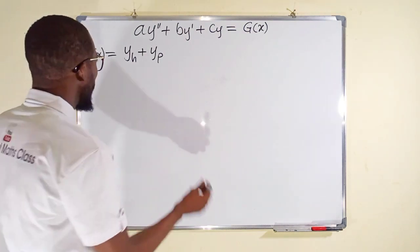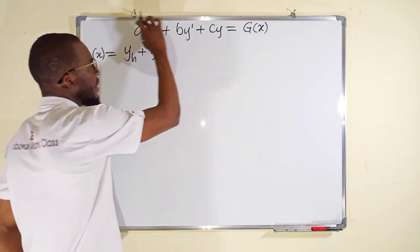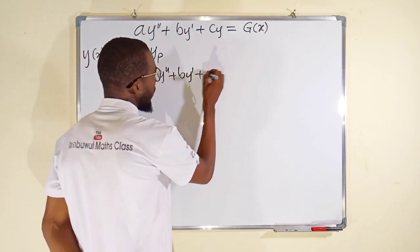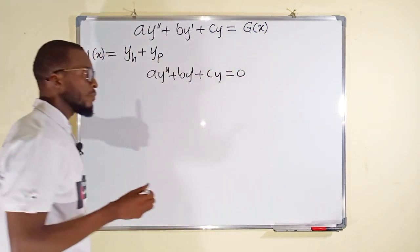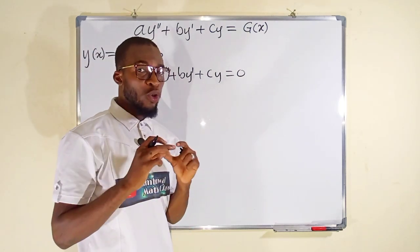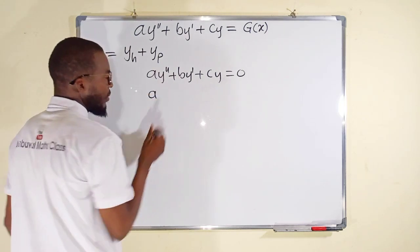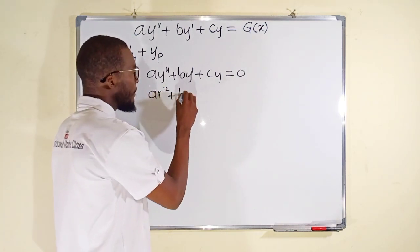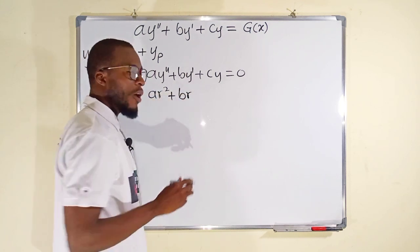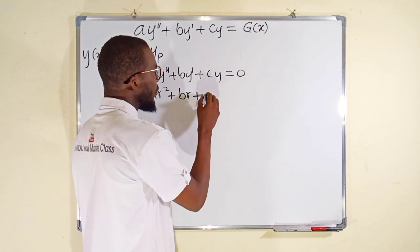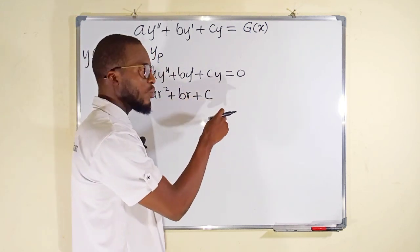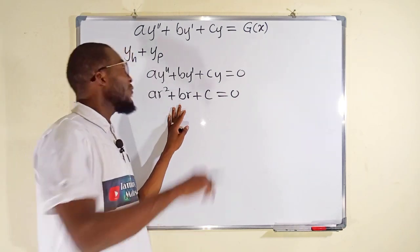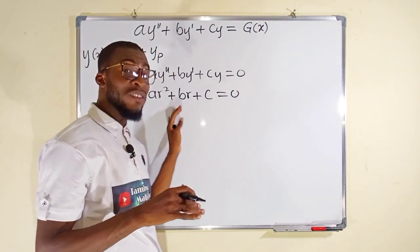To find the solution to the homogeneous type, we set the equation a y double prime plus b y prime plus cy equal to 0. Next, we transform it into an auxiliary equation. y double prime is replaced with r squared, y prime with r to the power of 1, and y with r to the power of 0, which equals 1. This gives us a quadratic equation in r, which we solve for the roots. The general solution to the homogeneous type depends on the nature of those roots.